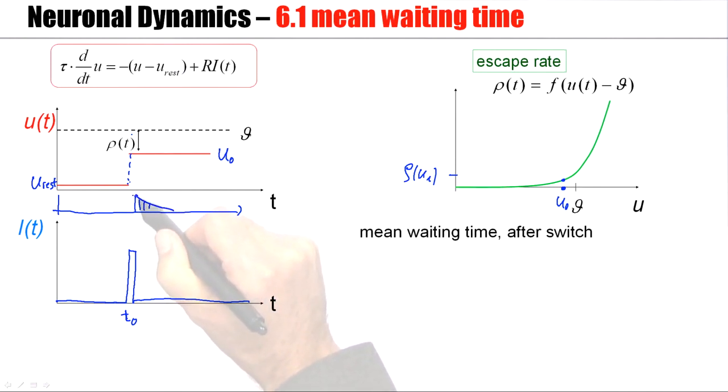This probability of firing a first spike will decrease over time just because if the neuron has fired in the first bin, it can no longer fire its first spike later.